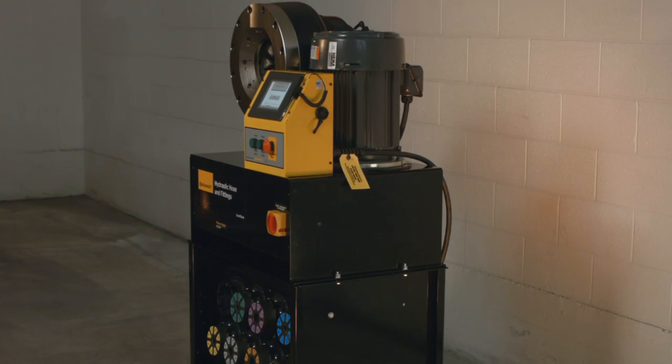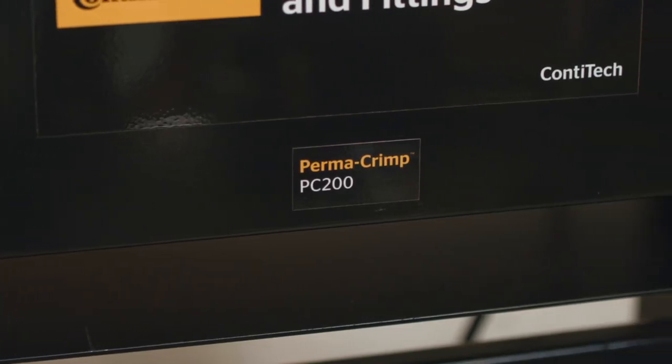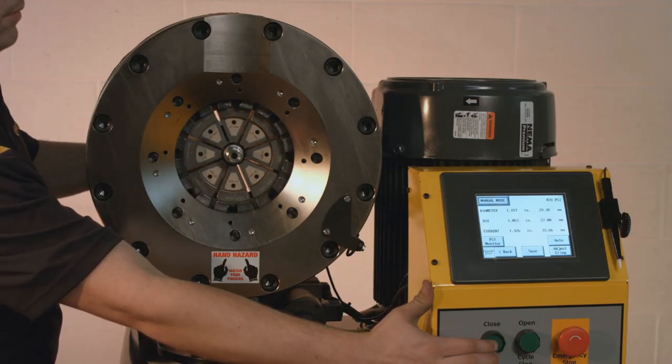In this video, we discuss the PC-200. This unit is designed for hoses from 1 quarter inch to 2 inches in diameter of 2-wire braid and 6-spiral hose construction.